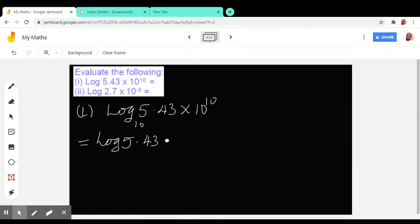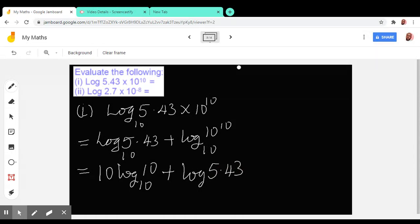5.43 plus log 10 raised to power 10, all in base 10. So we move forward by saying that this is 10 log 10 to base 10 plus log 5.43, which will give us 10 plus log 5.43.